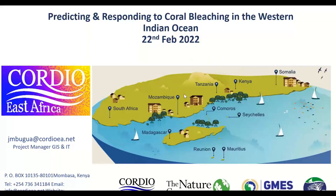Our first presenter is James Mbugwa, a GIS and remote sensing specialist and project manager at Cordio East Africa. He's involved in spatial analysis and interpretation of Earth observation data to address environmental challenges facing local communities in the Western Indian Ocean. James works for Cordio, a marine research institute and NGO located in Mombasa but operating across the Western Indian Ocean region, specializing in corals. Today he will present on predicting and responding to coral bleaching in the Western Indian Ocean.